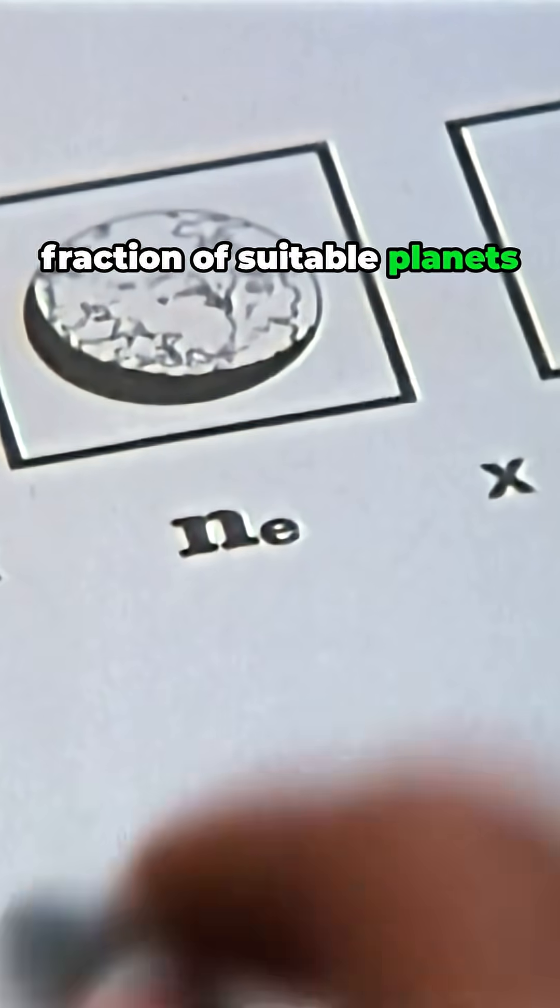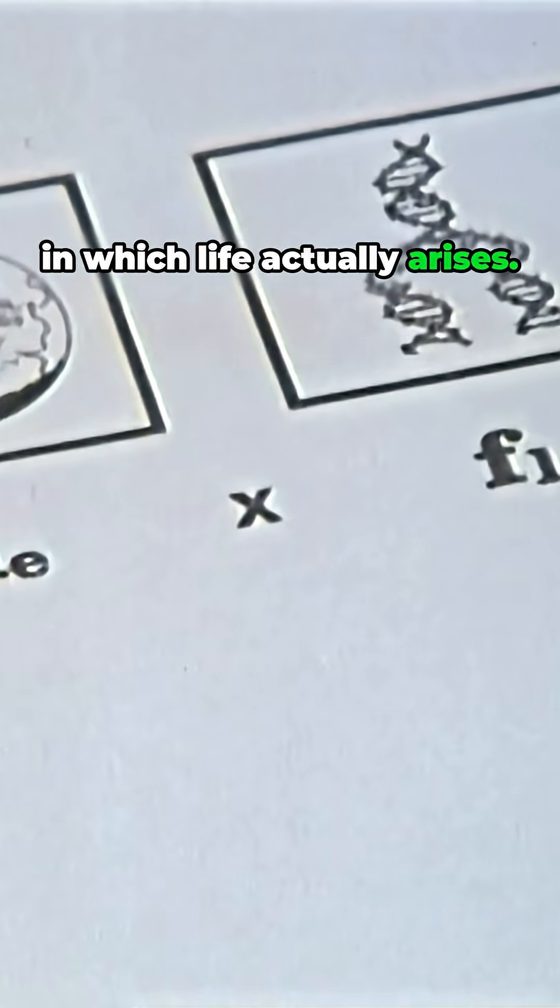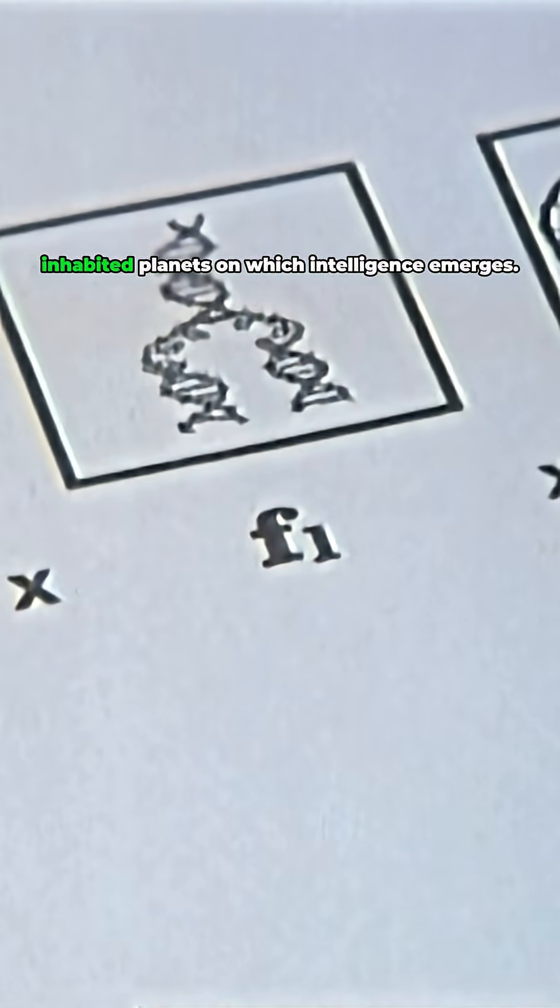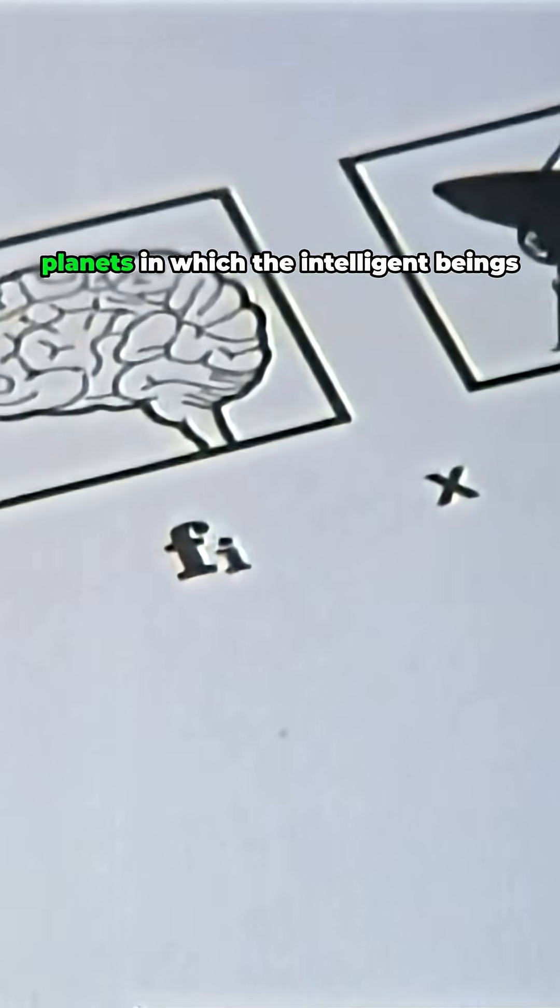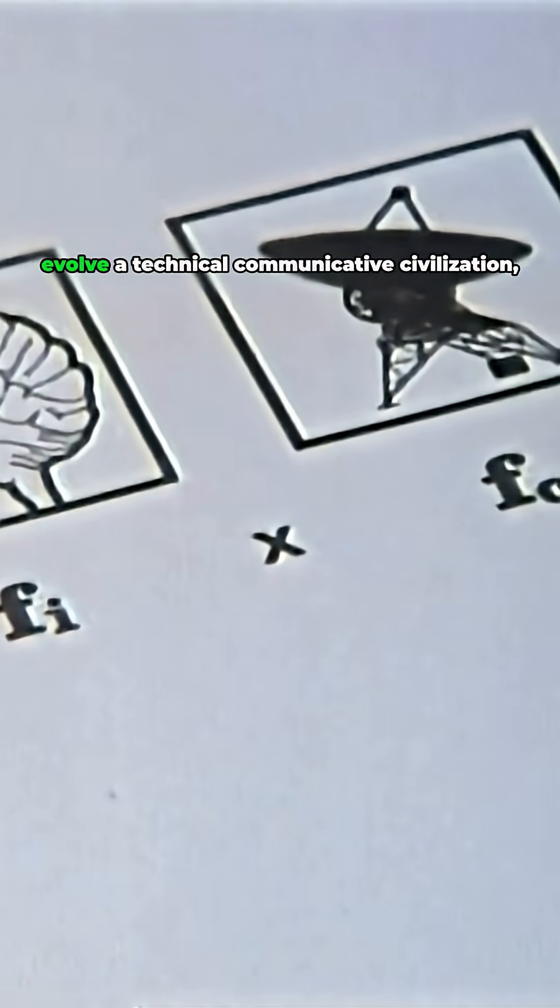It depends on the fraction of suitable planets in which life actually arises. It depends on the fraction of inhabited planets on which intelligence emerges, and on the fraction of those planets in which the intelligent beings evolve a technical communicative civilization.